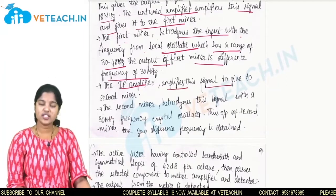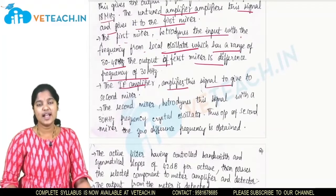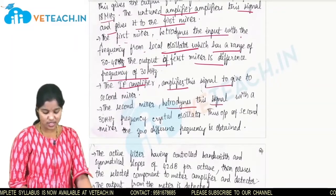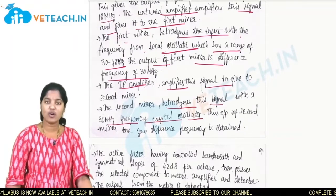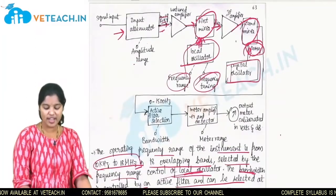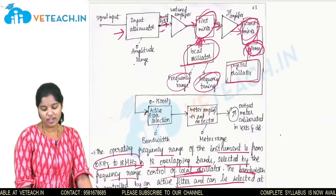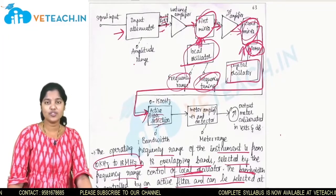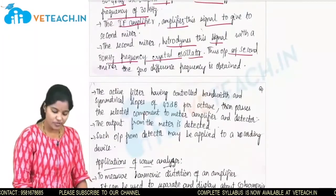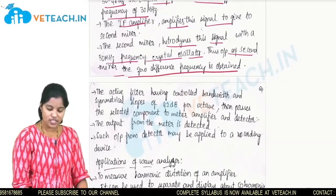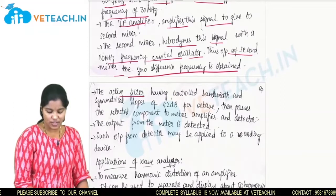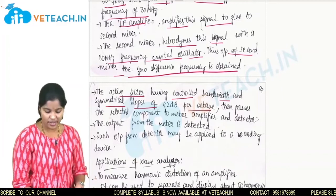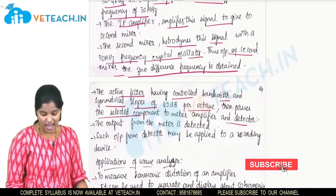The IF amplifier amplifies the signal and gives it to the second mixer. The second mixer heterodynes this signal with a 30 MHz crystal oscillator signal. The second mixer output — with a zero difference frequency — is fed to the active filter with a selection of 0 to 1500 Hz. The active filter has a controlled bandwidth and symmetrical slope of 42 dB per octave, and then passes the selected component to the meter amplifier.